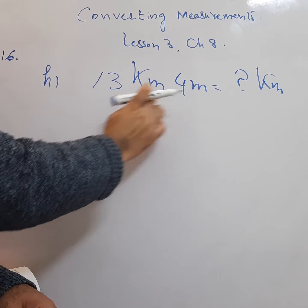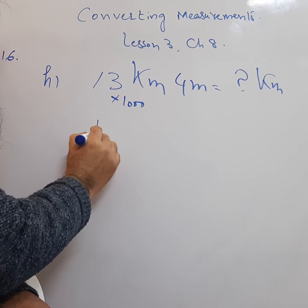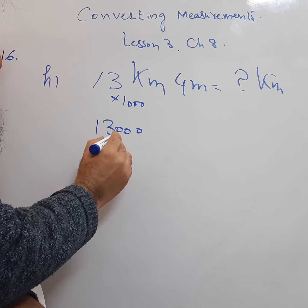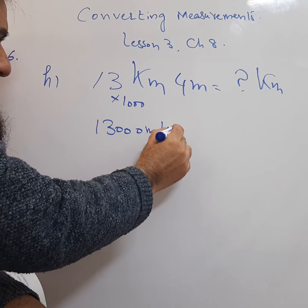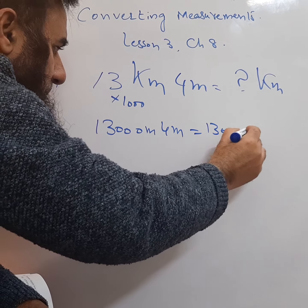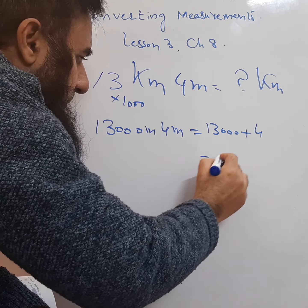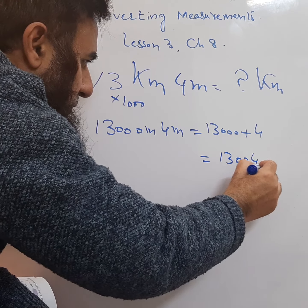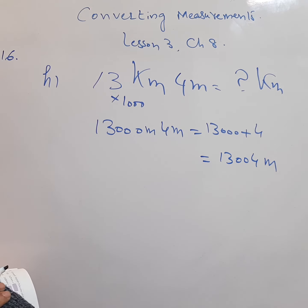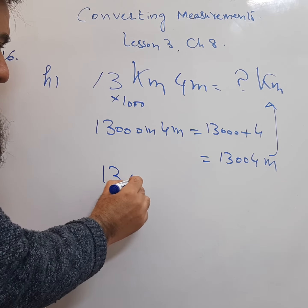This is in meters. Multiply this with 1000 - it becomes 13,000 meters. Add 4 meters. 13,000 plus 4 equals 13,004 meters. Now we need to convert it into kilometers. Write it like this: 13,004.0.